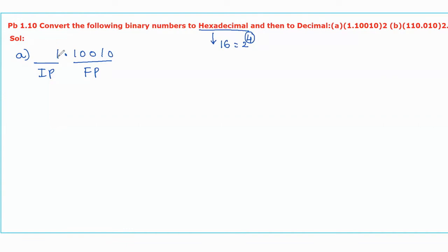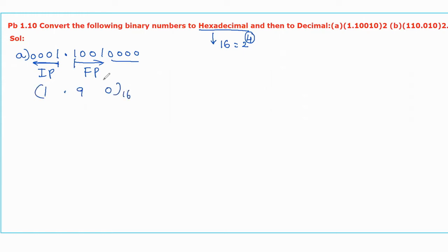For the integer part we have only one bit, so we have to append three more zeros towards the left side. For the fractional part we already have 5 bits, so we have to append three more bits towards the right side. The first group for the integer part starts from LSB, and for the fractional part this is the first group and this is the second group, starting from MSB. The equivalent hexadecimal value is 1.9 with base 16.